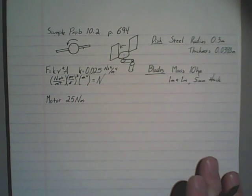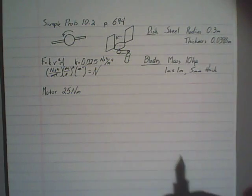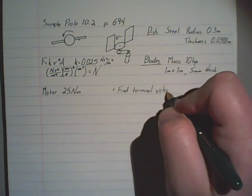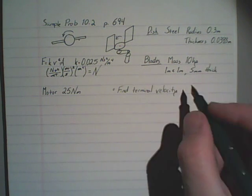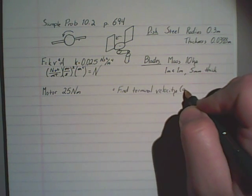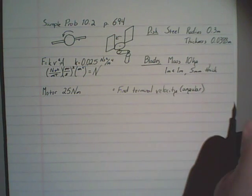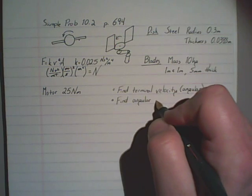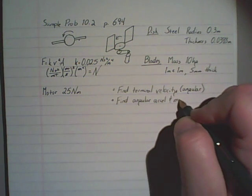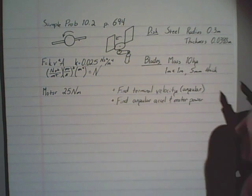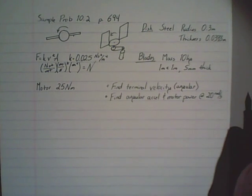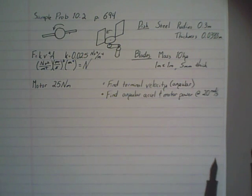So far so good. Now comes the hard part. We are being asked two things about this system. The first thing is find the terminal velocity, that's appropriately scary for Halloween, terminal means the end. And further, that velocity is the angular velocity. We are also being asked to find the angular acceleration and the motor power at an angular velocity of 20 radians per second. So being asked that kind of gives us a nice check. If our terminal velocity ends up being less than 20 radians per second, we probably did something wrong.